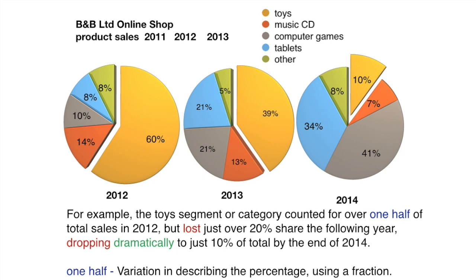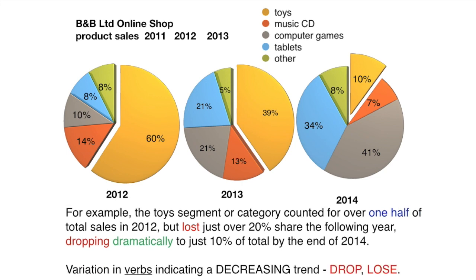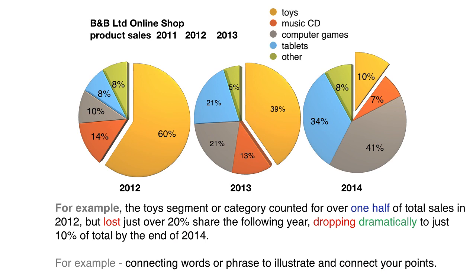For example, the toys segment or category accounted for over one half of total sales in 2012, but lost just over 20% share the following year, dropping dramatically to just 10% of total by the end of 2014. It's very important to use wonderful connecting words or phrases. In this sentence, the connecting phrase is 'for example' — these help you link your ideas and make your comparisons in your description whether speaking or writing.